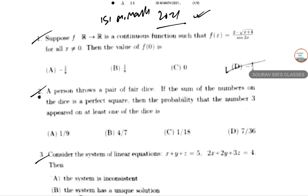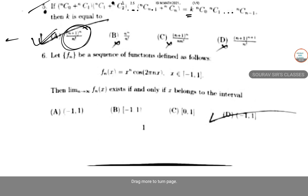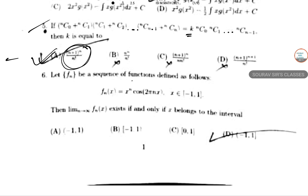Hello students, today we'll solve ISI M.Math 2021 question number 6. Let f_n be a sequence of functions defined as f_n(x) = x^n · cos(2πnx), where x belongs to [-1, +1]. We need to find: the limit as n tends to infinity of f_n(x) exists if and only if x belongs to which interval.